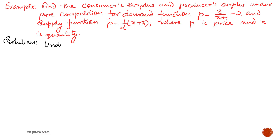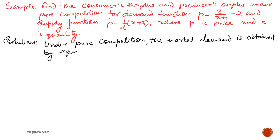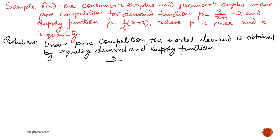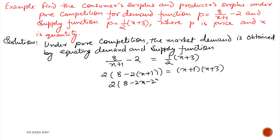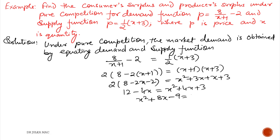Under pure competition, the market equilibrium is obtained by equating the demand and supply functions. Setting demand equal to supply: 8/(x+1) − 2 = (1/2)x + 3. After simplification, we obtain x² + 8x − 9 = 0, which factors as (x+9)(x−1) = 0, giving x = −9 or x = 1.